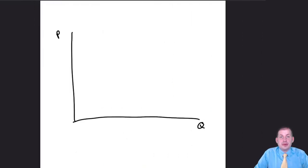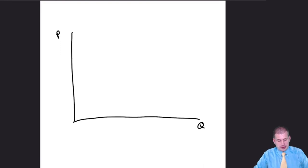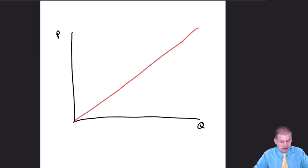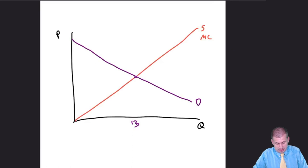To visualize the shaded triangles and rectangles for deadweight loss, it's easier to draw a graph on paper. We plot price and quantity with a marginal cost (supply) curve going up and a demand curve going down. Where they intersect is the ideal quantity and price society demands: Q equals 13.333 and P equals 26.666. Drawing lines down confirms those values.